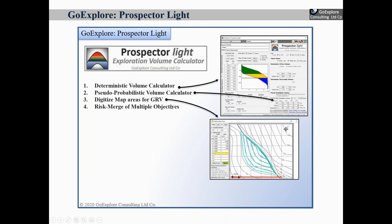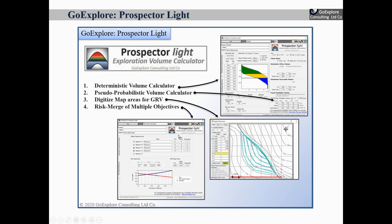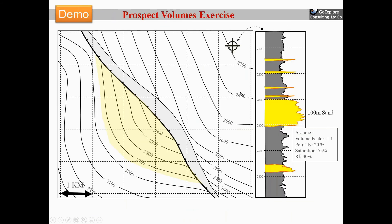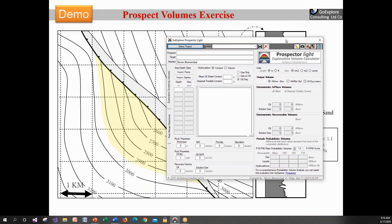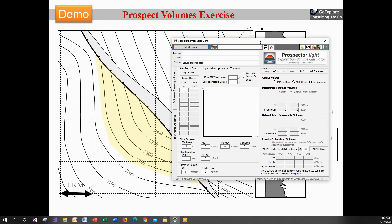Another thing: in order to calculate the gross rock volume, you can digitize a map using the area-depth method. You can also risk-merge multiple objectives in this tool, but in this webinar I'm not going to talk about that utility yet. So I want to do a short demo now of how that works. This is a little prospect mock-up — actually an example I use in one of my classes — and I want to calculate the volume for this one.